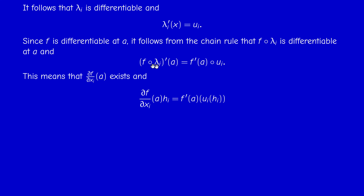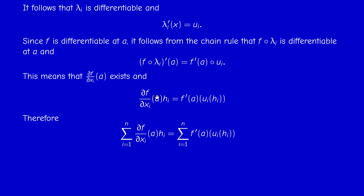By the chain rule, since λ_i is differentiable and f is differentiable at A, the composition f ∘ λ_i is differentiable, so the partial derivative with respect to x_i exists. Applying at increment h_i gives ∂_i f(A)(h_i). Summing over all i, since f prime(A) is linear, we can pull the sum inside: the sum of U_i(h_i) for i = 1 to n is just the vector h with components h_1, ..., h_n. Therefore f prime(A)(h) equals the sum of ∂_i f(A)(h_i).